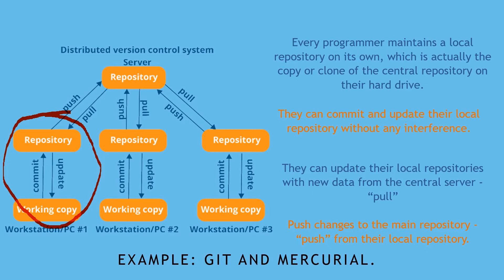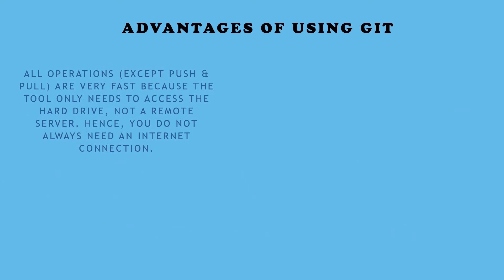Let's see the advantages of using Git over other revision control tools. The first advantage is that all operations like commit and update are done on our local machine. So if we are not connected to the remote server, those operations are still fast. The only operations that require a remote connection are push and pull, because those need to connect to the central repository.